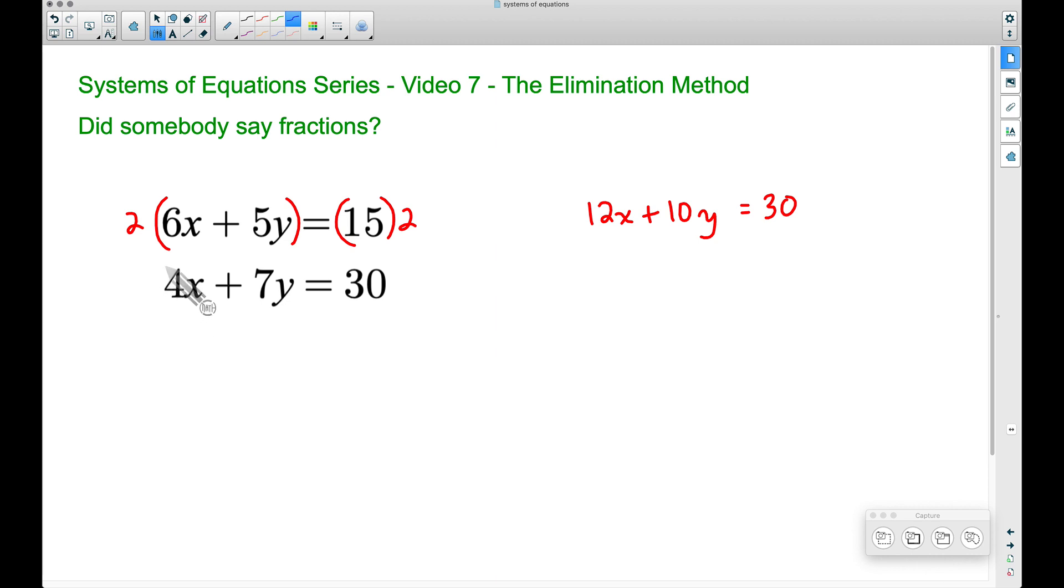Now in this second equation I want to multiply by negative three, and you may wonder why. Again I encourage you to go back and watch video five and six, but look at what's going to happen here. Why did I pick a negative three? Negative three times 4x is negative 12x. Boom! These are going to get eliminated right here in a moment. Then if we take negative three times 7y, that's minus 21y, and this is going to be equal to a negative 90. 30 times a negative three.